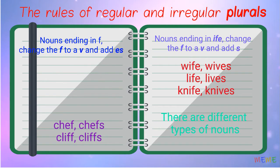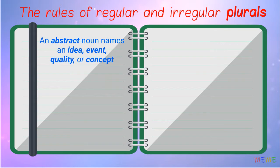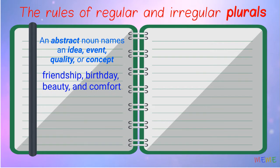1. An abstract noun names an idea, event, quality, or concept. For example: friendship, birthday, beauty, and comfort.